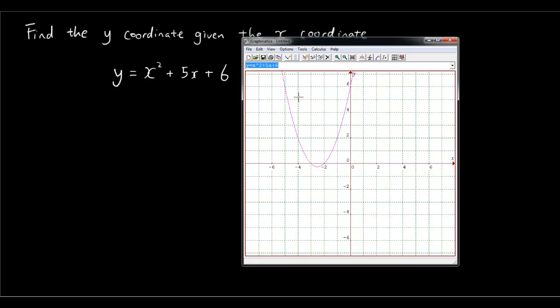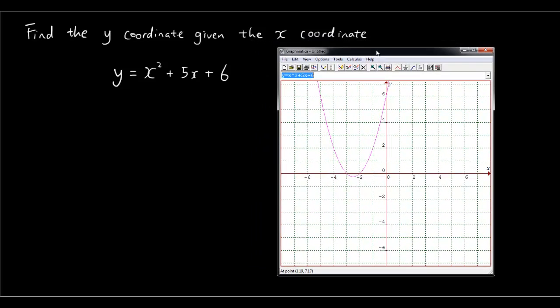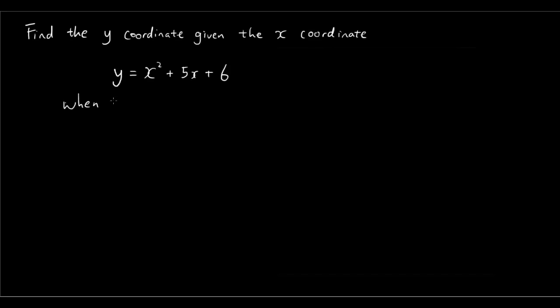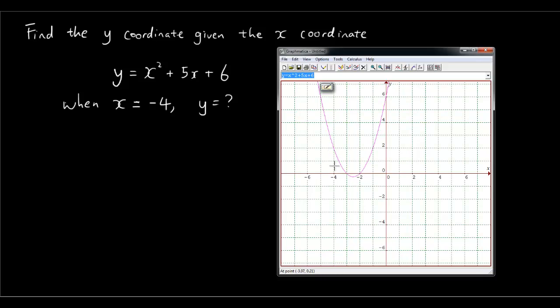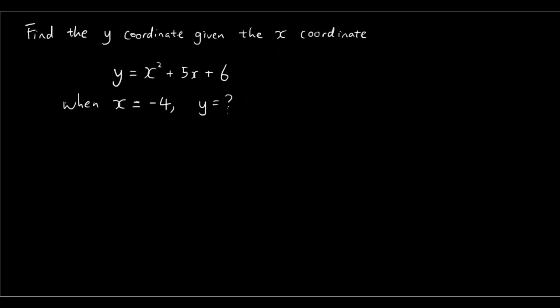So you can see that our graph is right here. From the graph we can pretty much answer the question straight away that if I tell you what an x coordinate is, it can tell me what the y coordinate is. So for example, I want to know when x equals negative 4, what is the y coordinate on this graph? So if we have a look at the graph, when x is equal to negative 4, which is right here, horizontally when x is equal to negative 4, y is equal to 2.